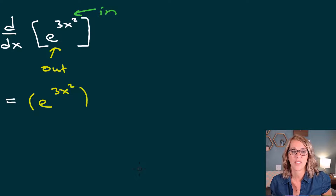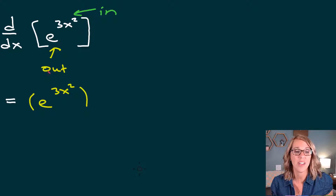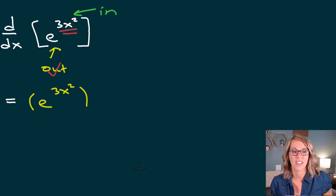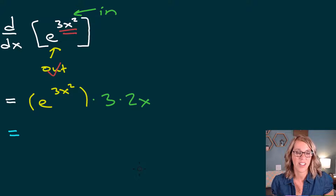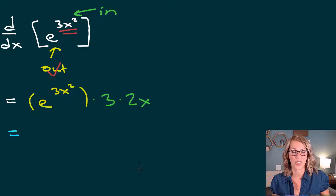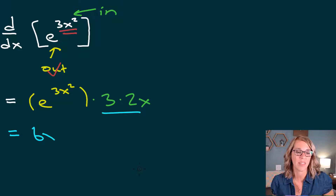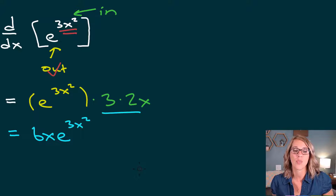Now I've got to take the derivative of the inner function — just the derivative of 3x squared. The 3 stays in place; the derivative of x squared gives times 2x. I can rewrite this as a single term, putting 6x out in front of the exponential: 6x e to the 3x squared.